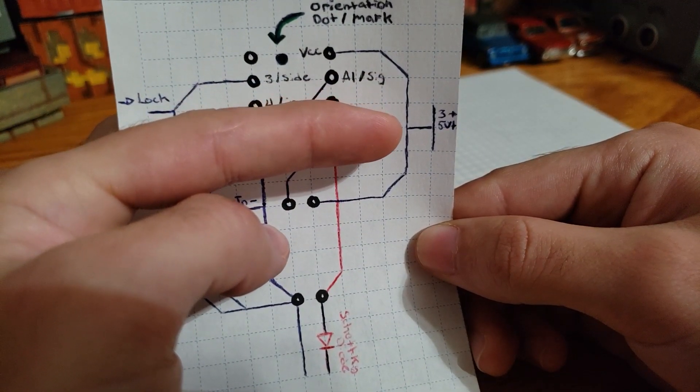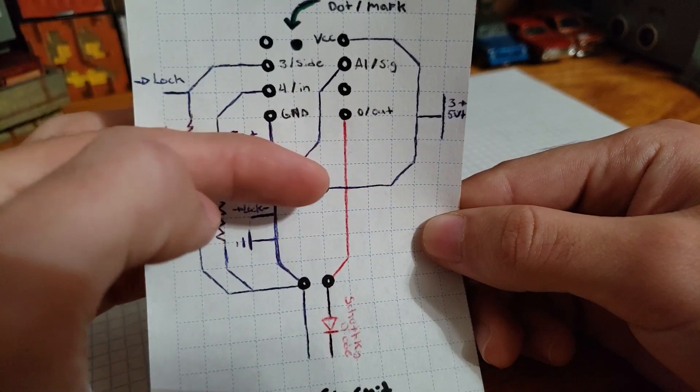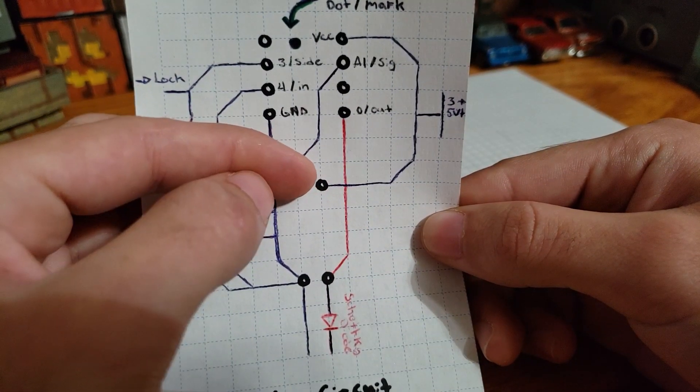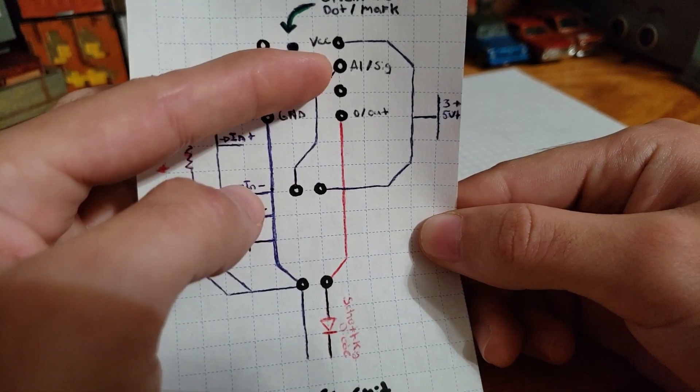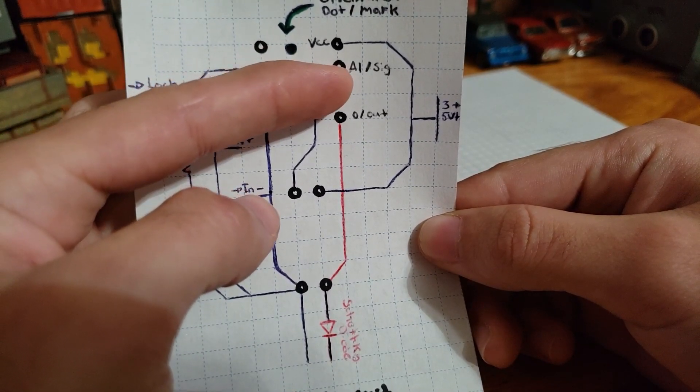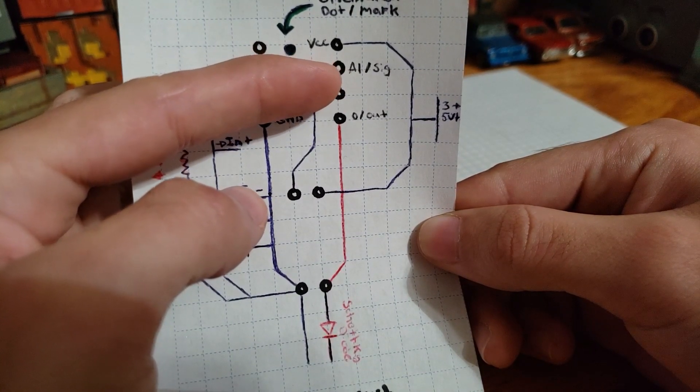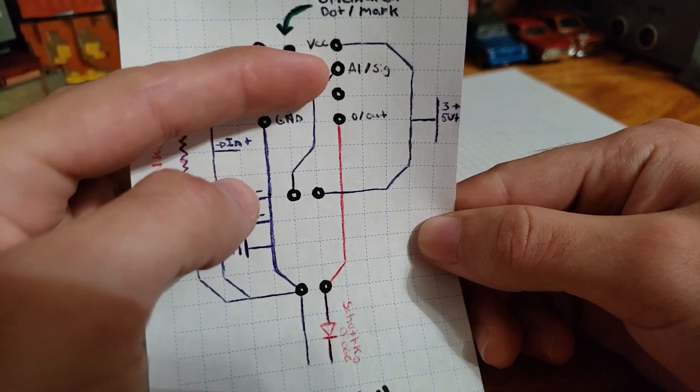Starting with VCC or positive, we have it connected straight to 3 to 5 volts positive, then connected over here to the middle header. This is connected to the potentiometer and the repeater itself. Below VCC is A1, also referred to as pin 2 of the ATtiny85. We're using the analog function connected straight to the other end of the repeater potentiometer.